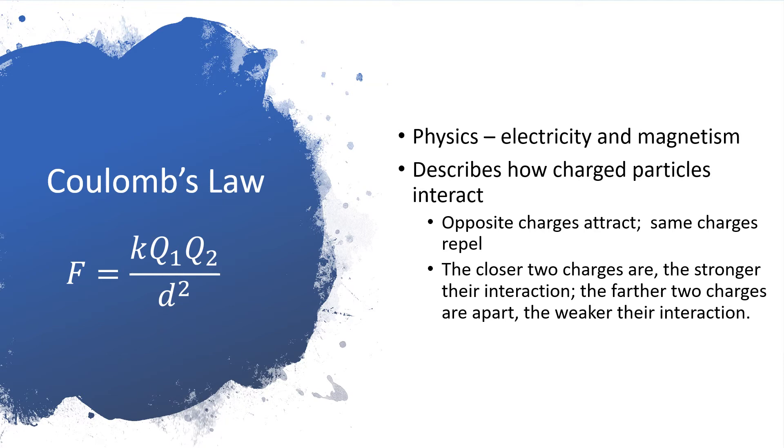So if we just look at the mathematical form of this law, the big lessons for bonding come from the two Qs in the top. So that just tells us that opposite charges attract each other and the same charges repel.